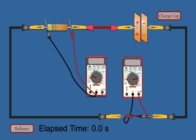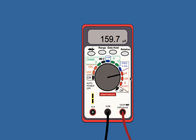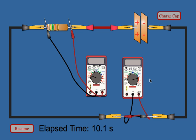You can then resume the simulation and the capacitor will start discharging. At periodic intervals, you want to pause your simulation and take readings of voltage and current. For example, at 10 seconds in, our voltage and current have dropped. You want to continue this process until you collect between 5 and 10 data points.